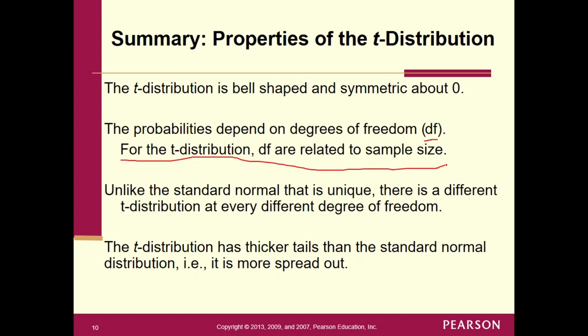Like the standard normal, there is a different t-distribution at every different degree of freedom — it's basically a family of t-distributions, not just one. There's a different one at every degree of freedom. The t-distribution has thicker tails than the standard normal distribution — it's more spread out.